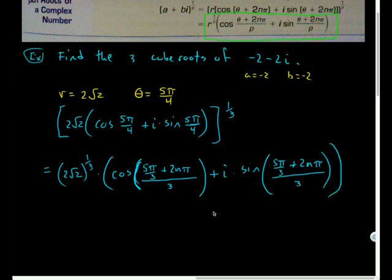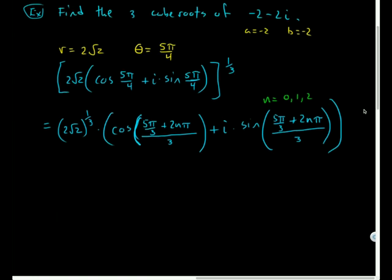Lots of parentheses going on here. So I'm interested in figuring out for n equal 0, 1, and 2. If this was a fourth root, then I would go up to 3. If it was a seventh root, I'd go up to 6. To find these distinct cubed roots of this problem.